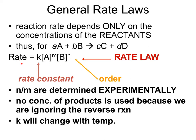Our general rate law is going to be equal to a rate constant k times the concentration of our reactants involved in the rate-determining process, each raised to some power. The rate constant k is specific to the reaction you're looking at and will have different units depending on the reaction type. The powers M and N on the concentrations are known as the order, and these orders are determined experimentally — we need real data to analyze M and N. Combining all these components gives you a rate law.